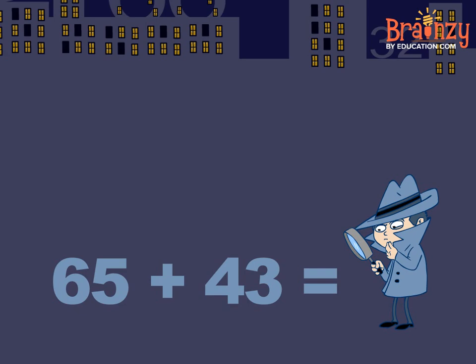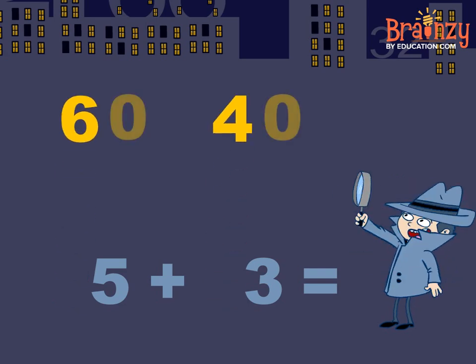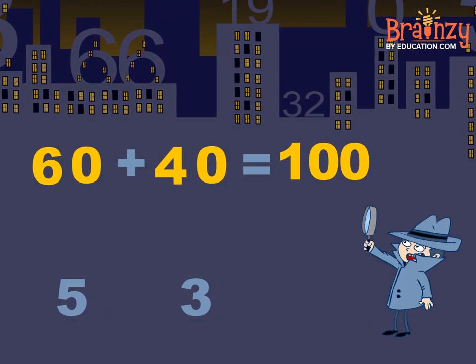Add the tens first, that's the key. 60 plus 40 is 100, you'll see.